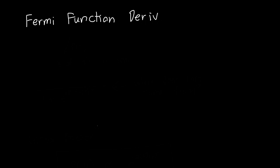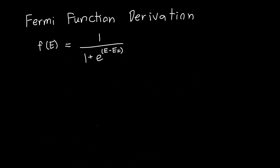In this video, we're going to derive the Fermi function. In the last video, I kind of just threw the formula for it at you. The Fermi function as a function of energy is just equal to 1 over 1 plus e to the energy minus the Fermi energy divided by kT. And that's all fine and good, but where does this come from?